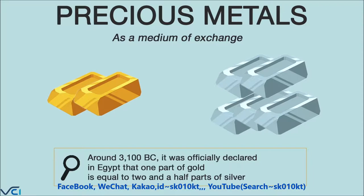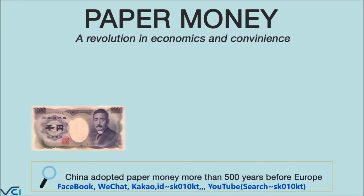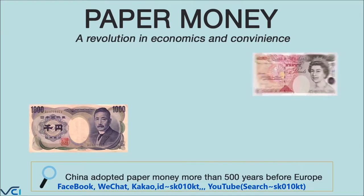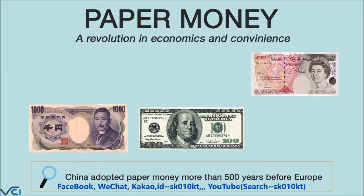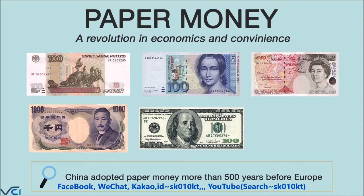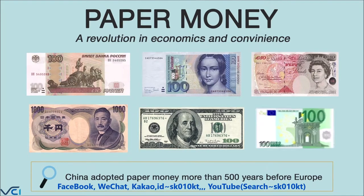Barter then gave way to precious metals, with gold and silver bars being used in Egypt and Mesopotamia around 4,000 BC. The oldest coin currency known to us is a Sumerian bronze piece dating back to 3,000 BC. Precious metals remain a symbol of prosperity to this day, but they were hardly convenient to trade with.